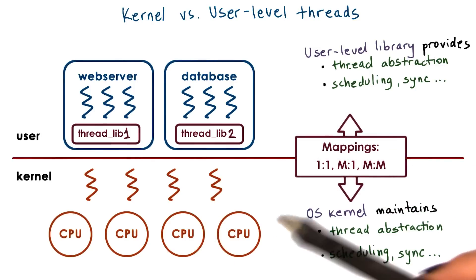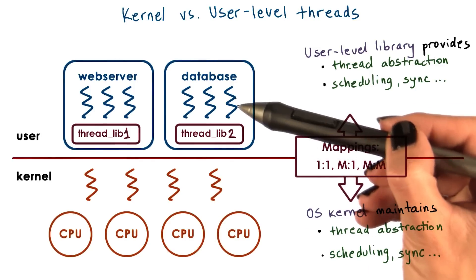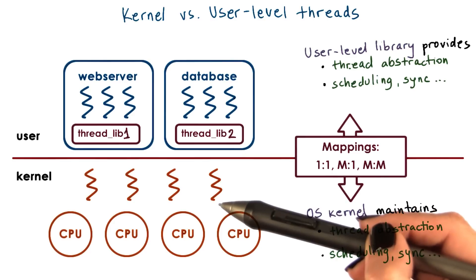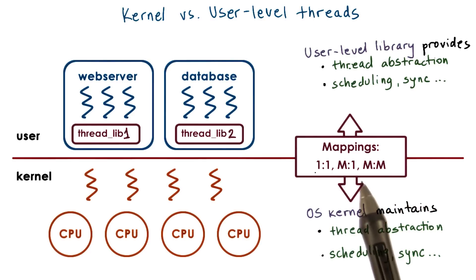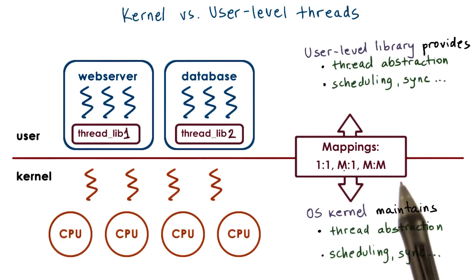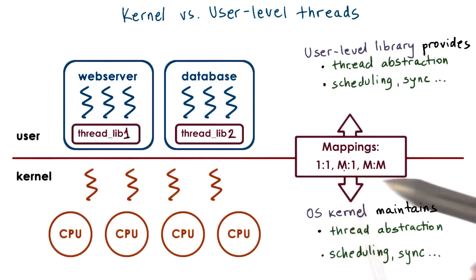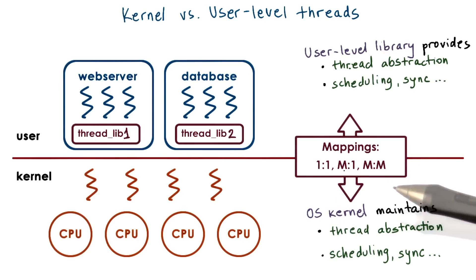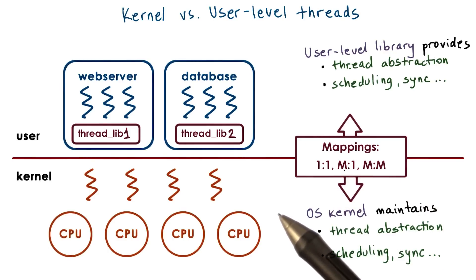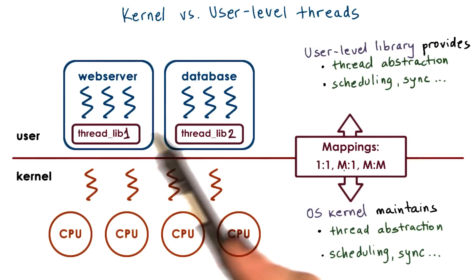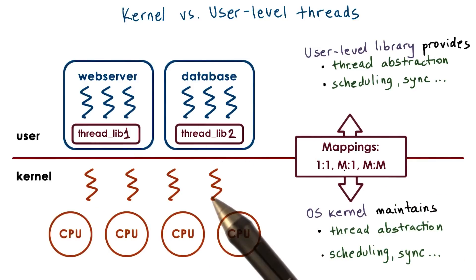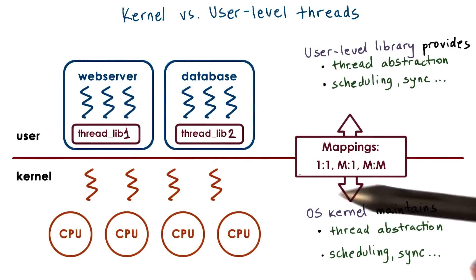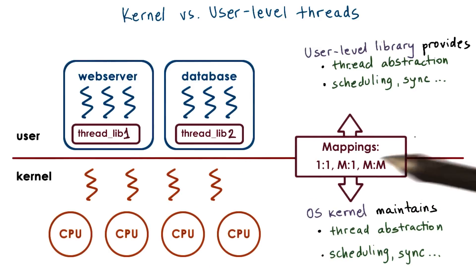We also discussed several mechanisms for how user-level threads can be mapped onto the underlying kernel-level threads. These include a one-to-one, many-to-one, and a many-to-many mapping, and we briefly touched upon some of the pros and cons of each approach. Now we'll take a more detailed look at what exactly is needed to describe kernel versus user-level threads and to support all of these types of models.